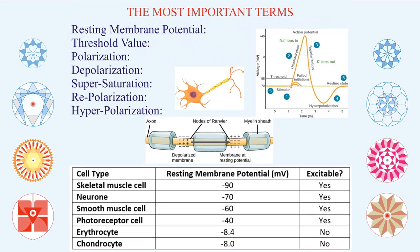Let us talk about the most important term with respect to equilibrium potential: the resting membrane potential. As I told you, the charge inside is negative and outside is positive. As shown in the picture, in skeletal muscles, resting membrane potential is minus 90 millivolts; in neurons it is minus 70; smooth muscle is minus 60; photoreceptor cells are minus 40; erythrocytes (RBC) are minus 8.4; and chondrocytes are also minus 8.4. The picture in the middle also shows that in a depolarized state, positive ions are inside, whereas in the resting membrane you can see negative — this is very clear.